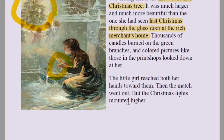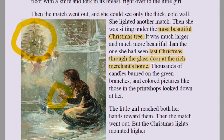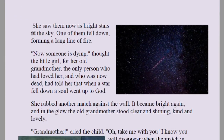The little girl reached both her hands towards the tree. Then the match went out — but the Christmas lights mounted higher. Unlike other visions that vanished entirely, this time the Christmas lights remained. She saw them as bright stars in the sky, one of them falling and forming a long line of fire. The Christmas lights moved up into the sky forming lines of fire.